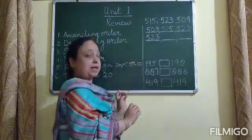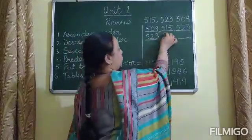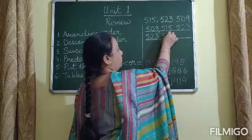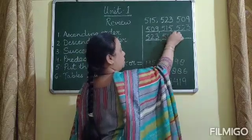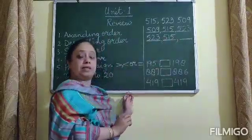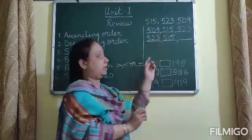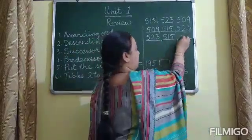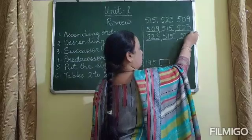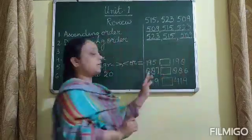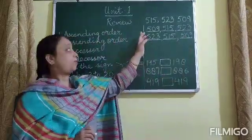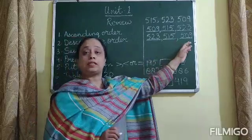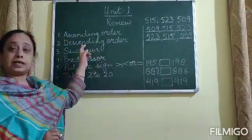And the second number in the arrangement will be 515. And the third number, the smallest number here, is 509. So, this is the arrangement of numbers from greatest to smallest—that is, descending order.